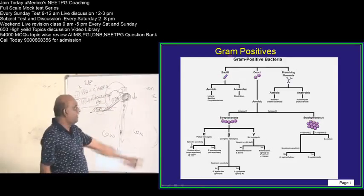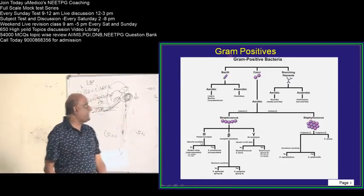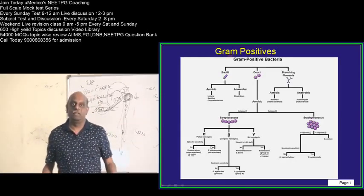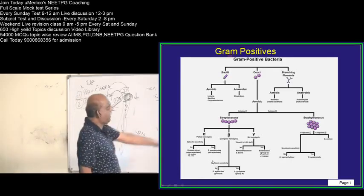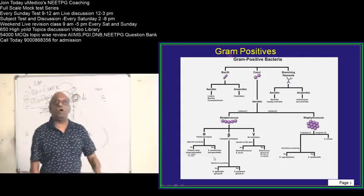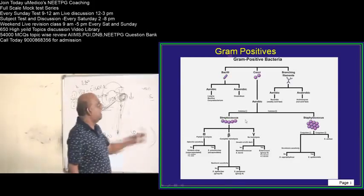Then, among the alpha hemolytic, you will look whether it is optochin sensitive or not. Suppose, if it is optochin sensitive, then typically,